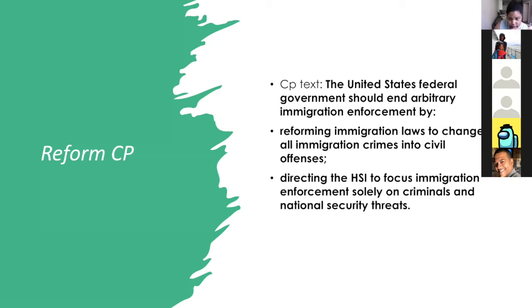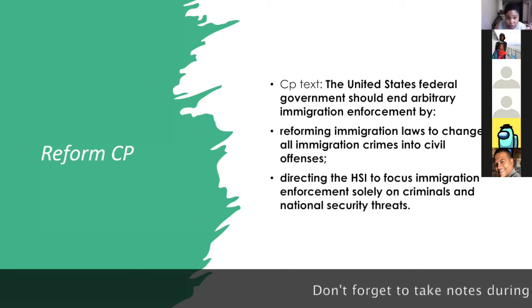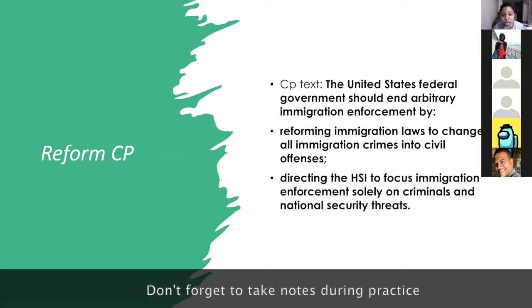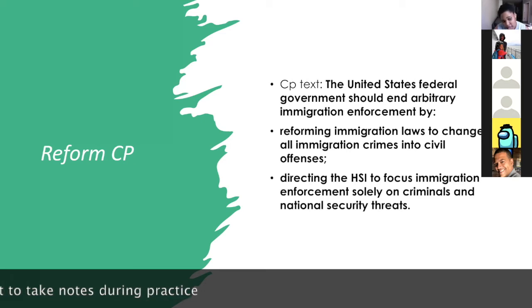The reform counter plan text says the United States federal government should end arbitrary immigration enforcement by: one, reforming immigration laws to change all immigration crimes into civil offenses, and B, directing the HSI to focus immigration enforcement solely on criminals and national security threats. Why the counter plan? There's a reason it's called a reform counter plan versus an abolition affirmative.